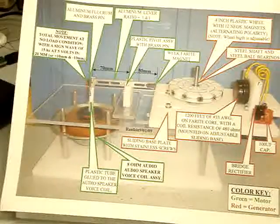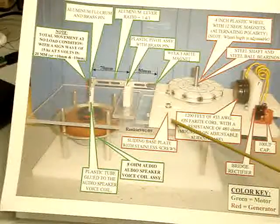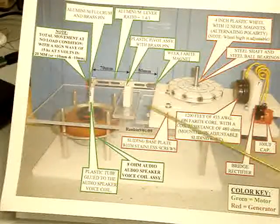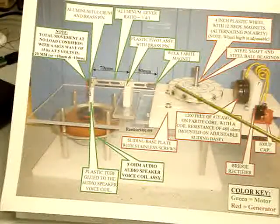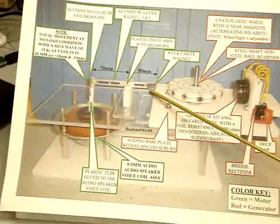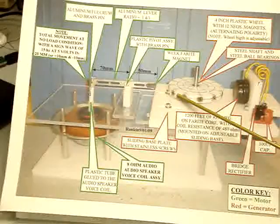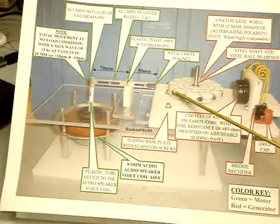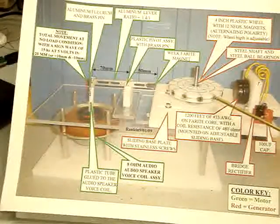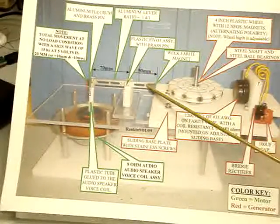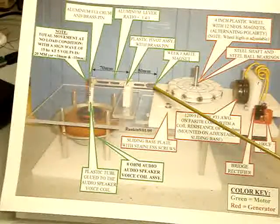So the generator portion is built on a sliding base that I can move back and forth, makes it adjustable, allows me to adjust the clearance between my lever magnet and my rotating wheel magnets, which are north, south, north, south. These are neodymium, and this is a weak ferrite magnet.